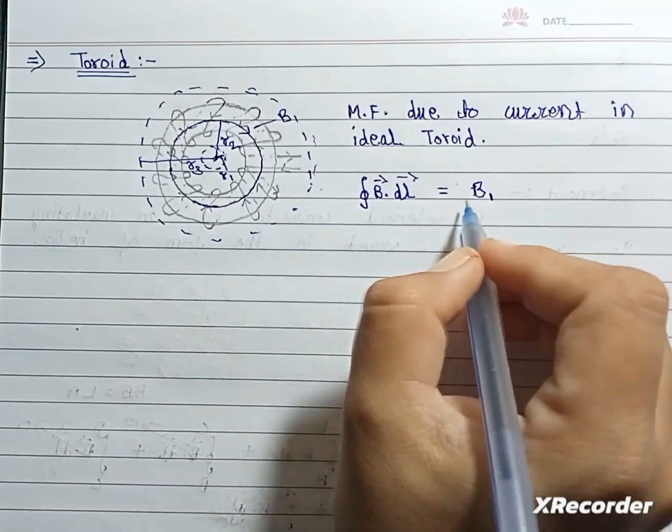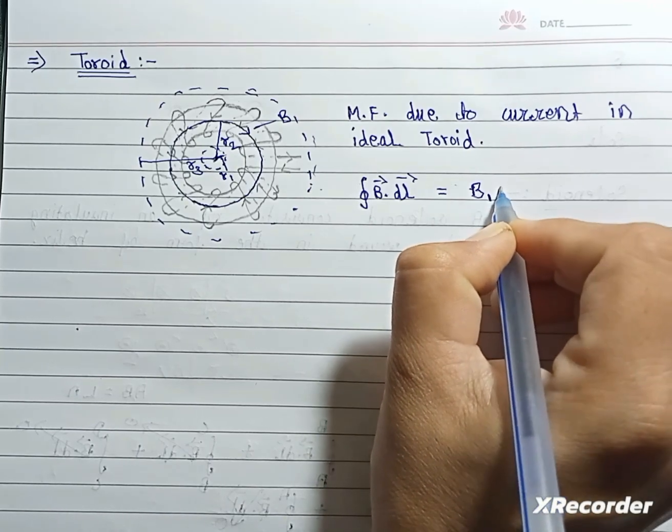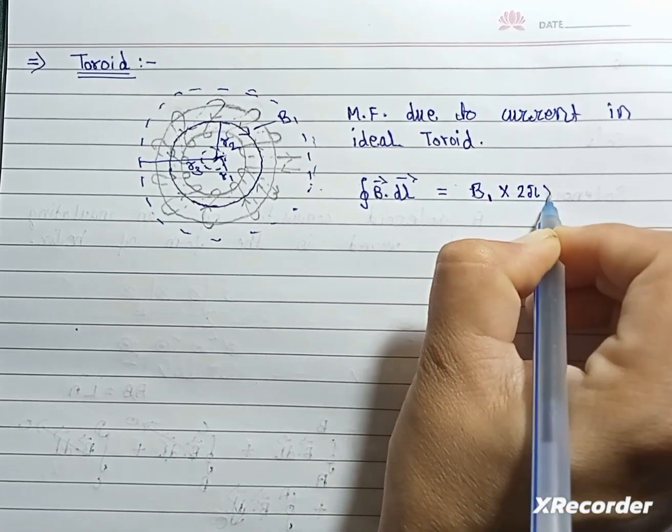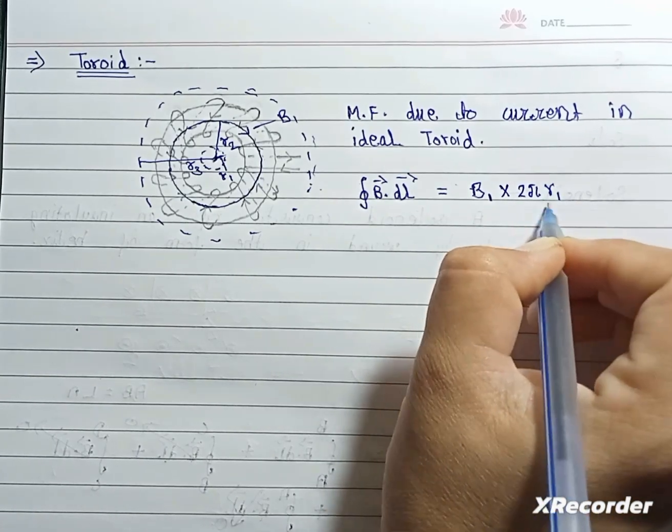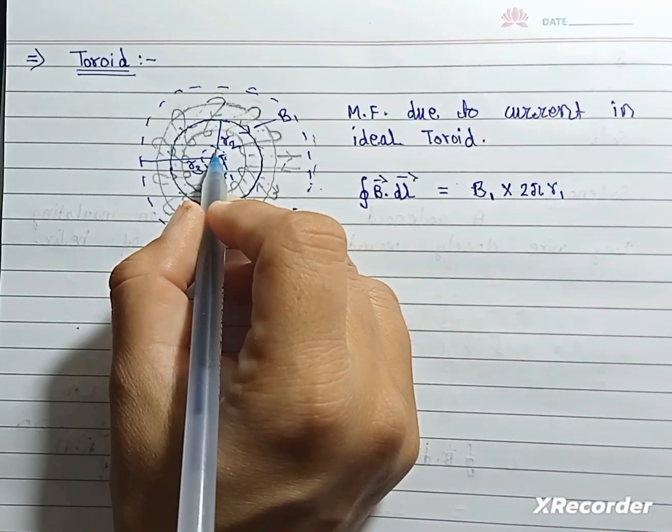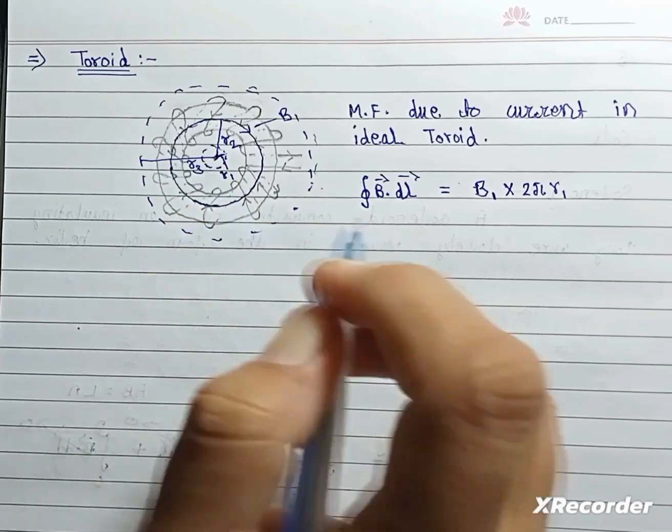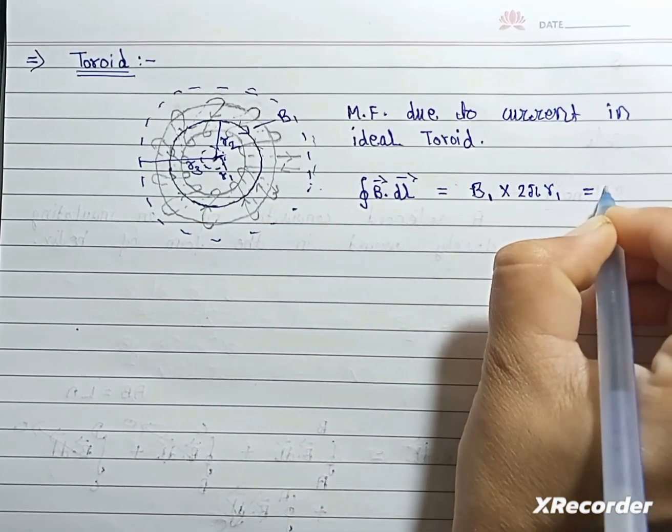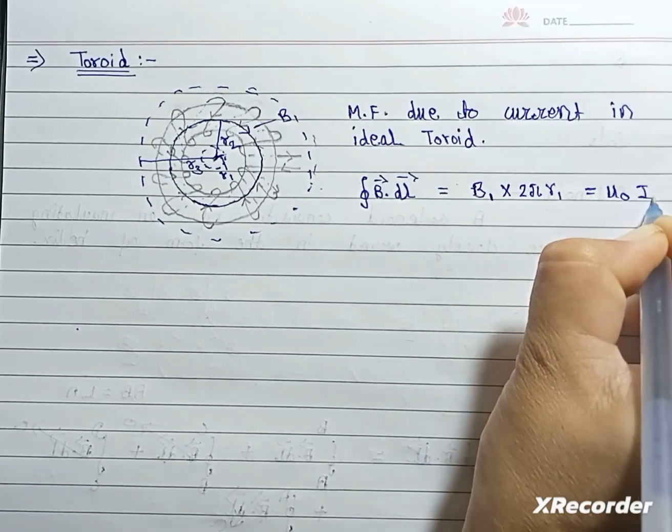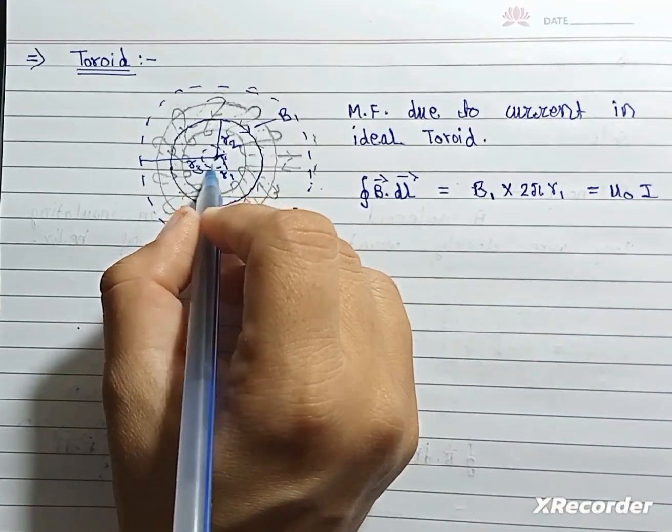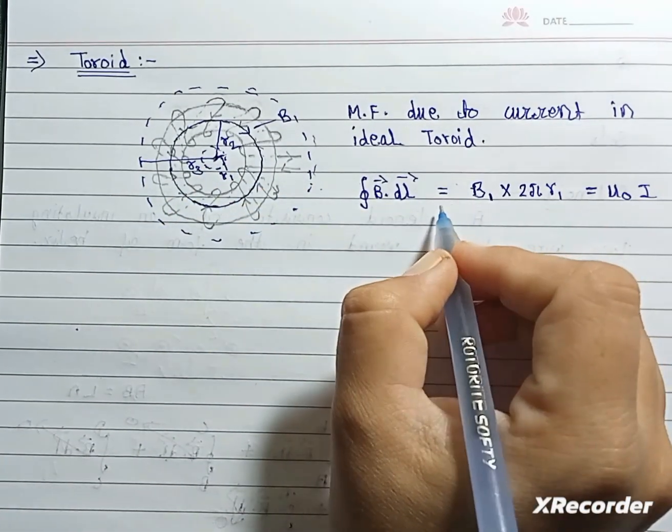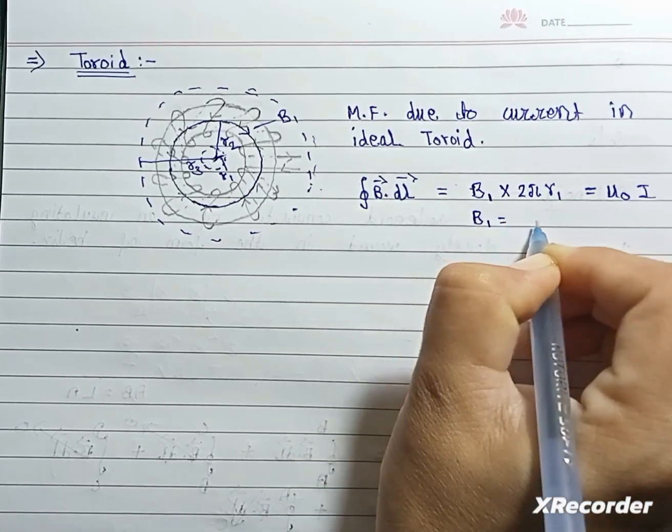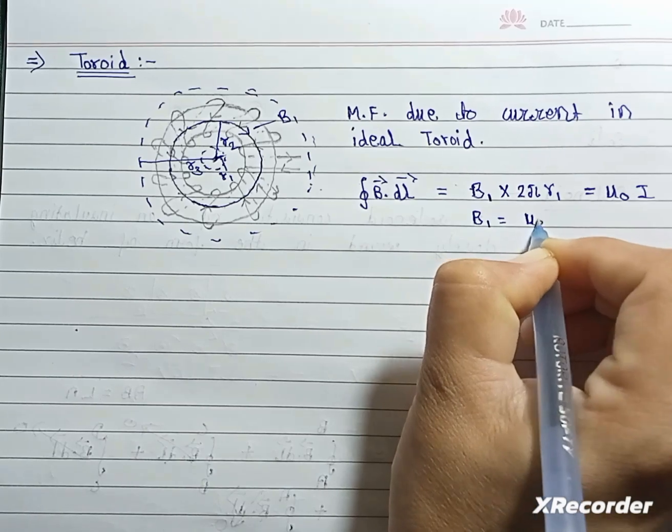Here this is 2πr1 because for loop first, radius of loop is r1, and this is equal to μ₀I. For loop first, I is 0, so from here we get B1 equal to μ₀ times 0, this is equal to 0.